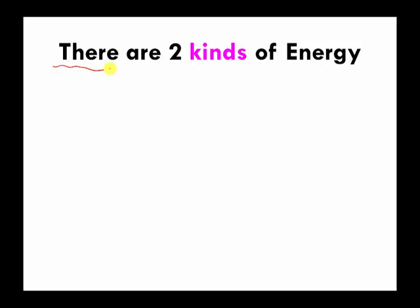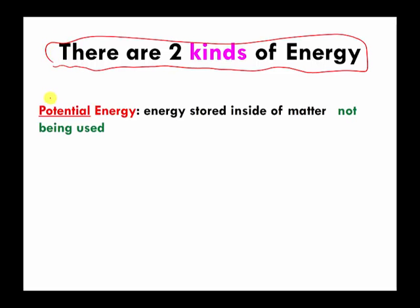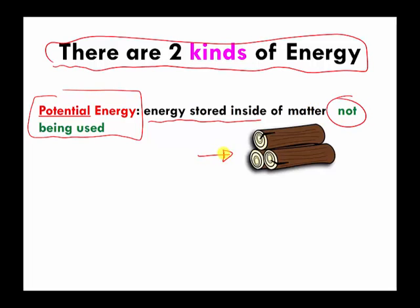Traditionally, people think of energy as coming in one of two forms, so there are two kinds of energy. The first kind, again, very informal, is called potential energy. You should think of that as energy that is stored inside of a piece of material, but it's not currently being used. The best example of that is the logs, again, or these pieces of wood. Imagine that they're sitting by your fireplace. They have potential energy.